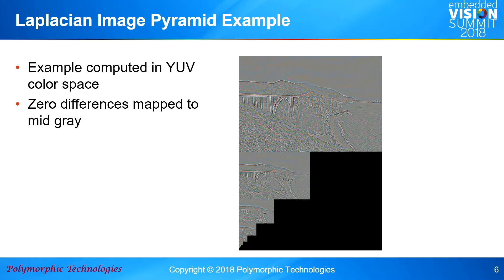Here's an example of the Laplacian image filter. This is computed in a YUV space — a chroma-luma space. Zero differences in this one are mapped to gray, because you've got positive and negative differences, so gray is neutral.